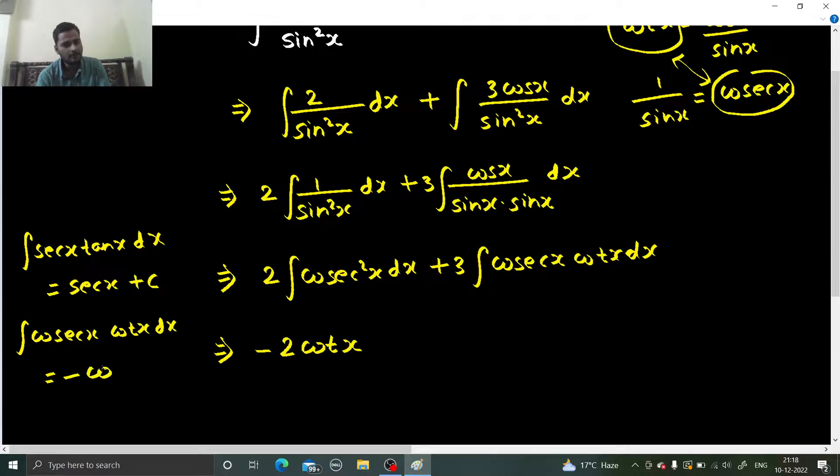minus of cosecant x plus C. Fine. So minus of cosecant x plus C. If you want, you can take minus sign out completely - your choice.